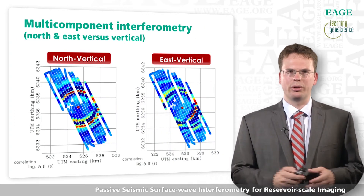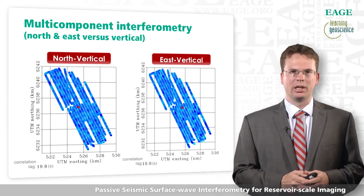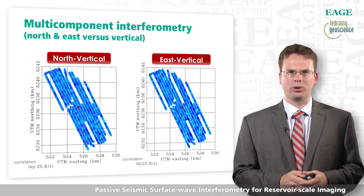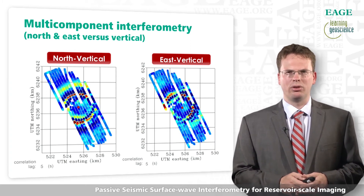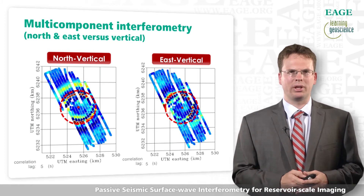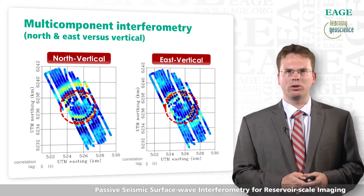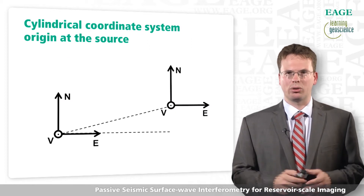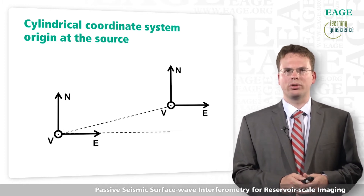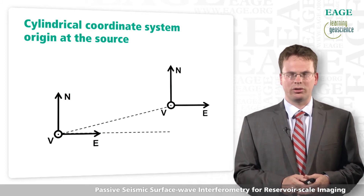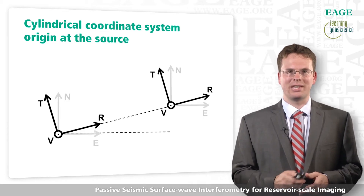Instead of just cross-correlating vertical components with vertical components, you can also cross-correlate vertical components with the north component and with the east component. These waves look much more difficult to interpret because their polarization now depends on propagation direction. If you look at the wave front for a certain time slice, you can see the polarity changes as a function of azimuth. A much more natural coordinate system may therefore be a cylindrical coordinate system. This is the coordinate system we record in — north, east, and vertical components — but after turning one station into a virtual seismic source, a more natural system is a cylindrical one centered at the source.